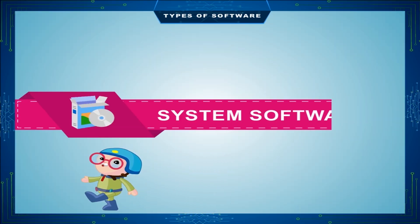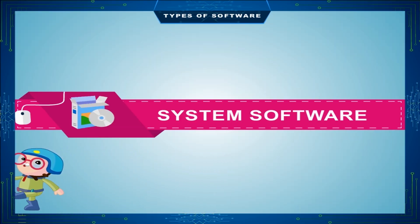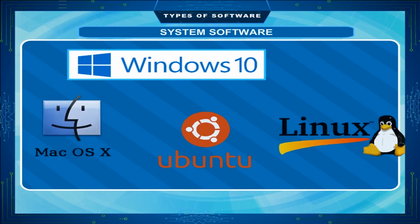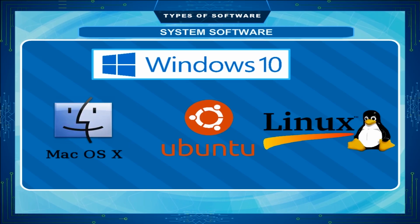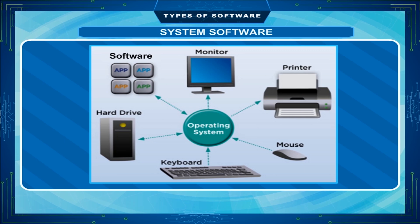System software is a set of programs that controls the operation of a computer. Operating system is a part of system software that makes the computer work. The operating system manages and controls the working of both the hardware as well as the software.